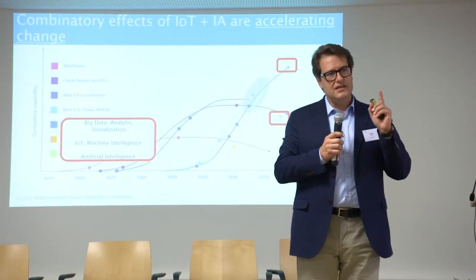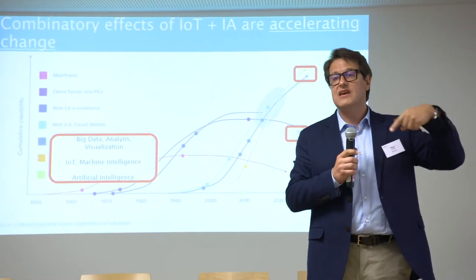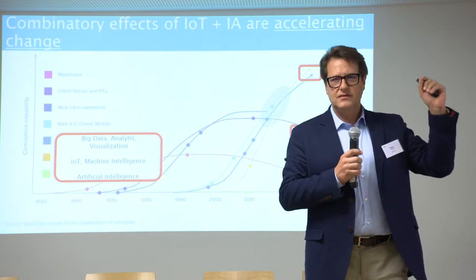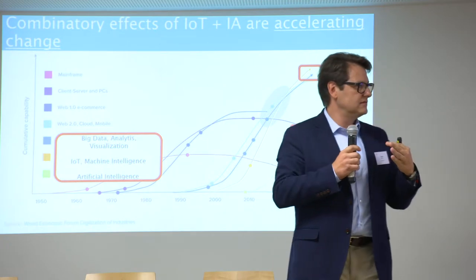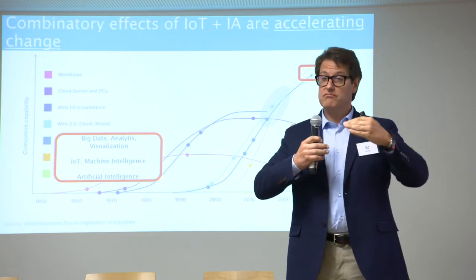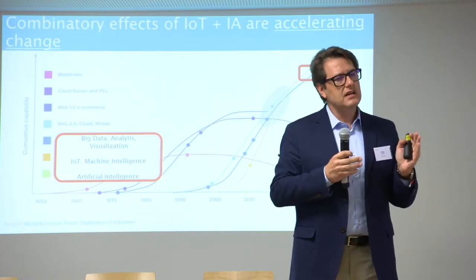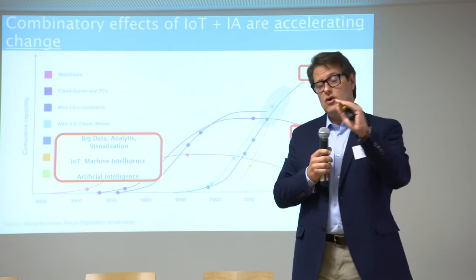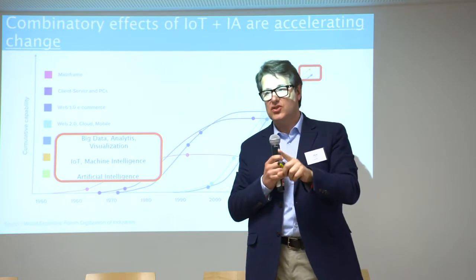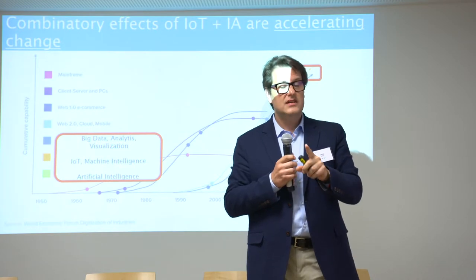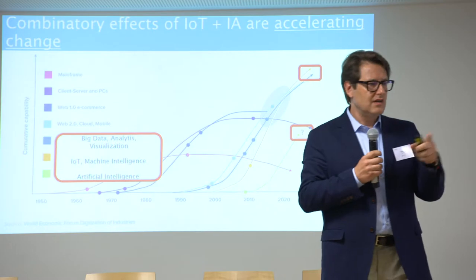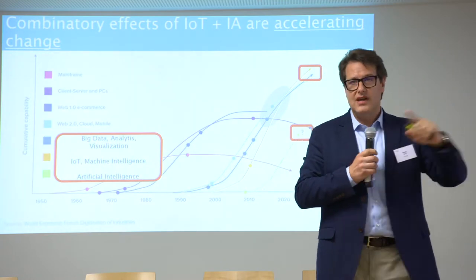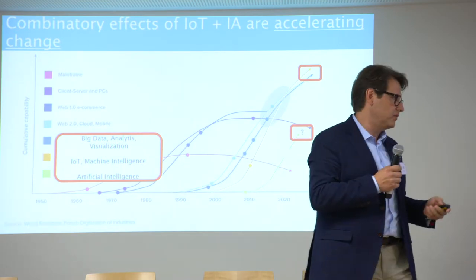The key word is convergence. You have different technologies that couple and overtake each other. What we're seeing is three foundational ones: IoT, AI, and blockchain. Those combined are very powerful — not because they foster change; change is a constant. It's because they accelerate change. Every time someone says 'I have a change plan,' that sounds boring. What we need is a plan to accelerate change, and those technologies are doing exactly that for us as business people and society at large.